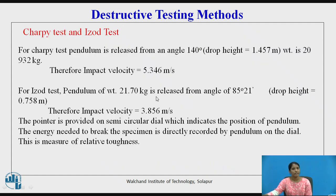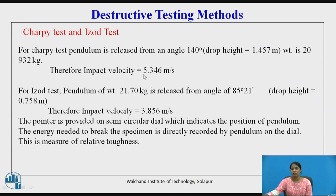For the Charpy test, the pendulum is released from an angle of 140 degrees — that is, a drop height of 1.457 meters — and the weight is 20.932 kg. The impact velocity is root(2gh), that is, root(2 × height × gravitational force). The impact velocity for the Charpy test is 5.346 meters per second.